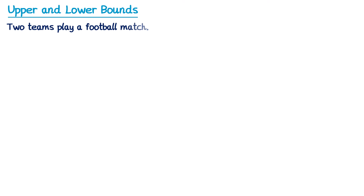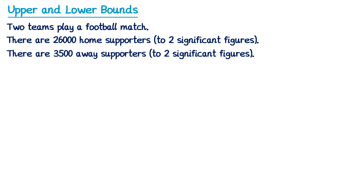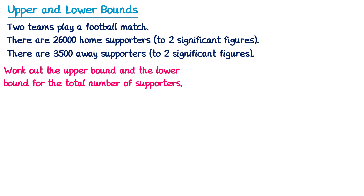Let's have a look at a second example. Two teams are going to play a football match. There are 26,000 home supporters, but this is to two significant figures, and there are 3,500 away supporters, also to two significant figures. The question asks us to work out the upper bound and the lower bound for the total number of supporters. To find the total we would usually just add the two numbers together, but before we add them we're going to work out their own error intervals.